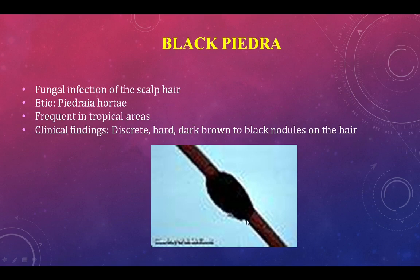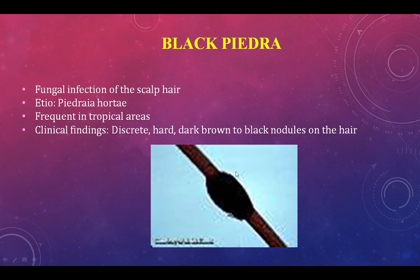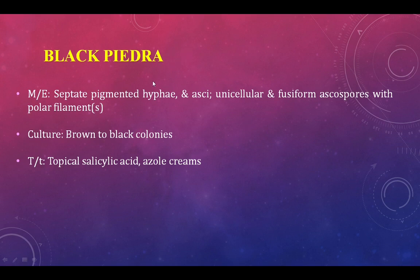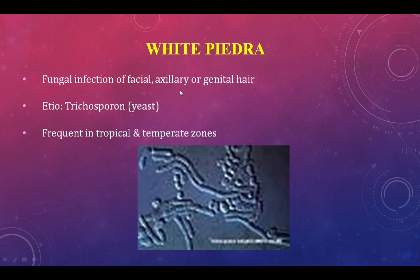Black piedra is a fungal infection of scalp hair caused by Piedraia hortae, again common in tropical areas. Clinically you see hard dark brown to black nodules on the hair shaft. On microscopy you find septate pigmented hyphae and asci. Culture shows brown to black colonies. Treatment is topical salicylic acid and azole creams.